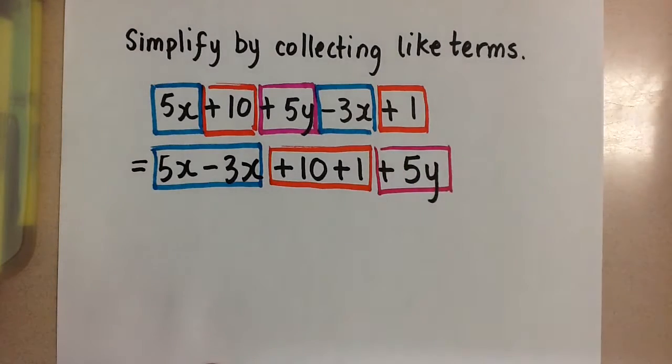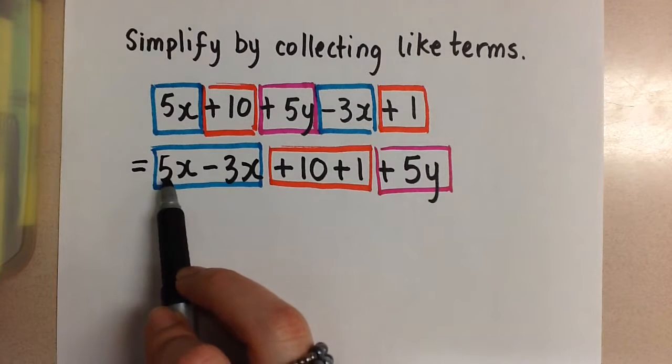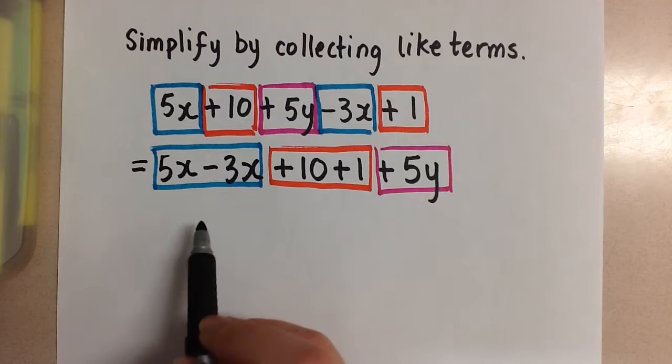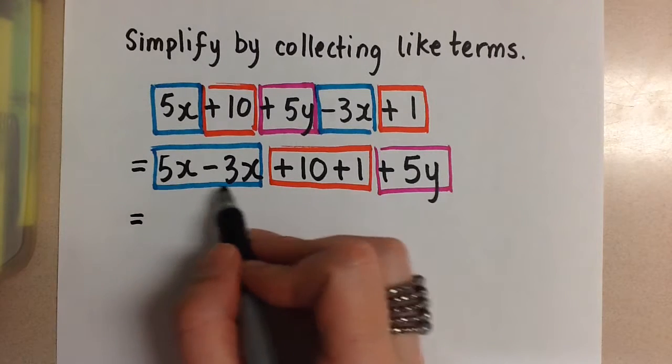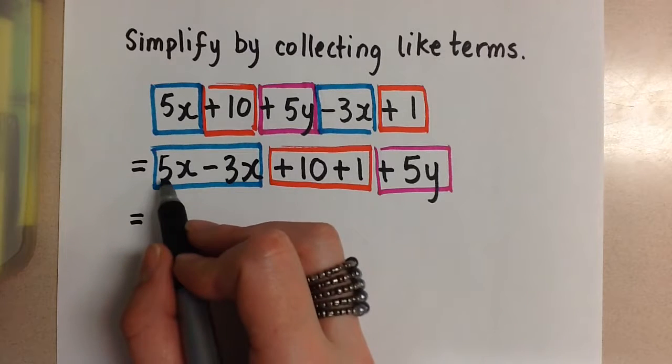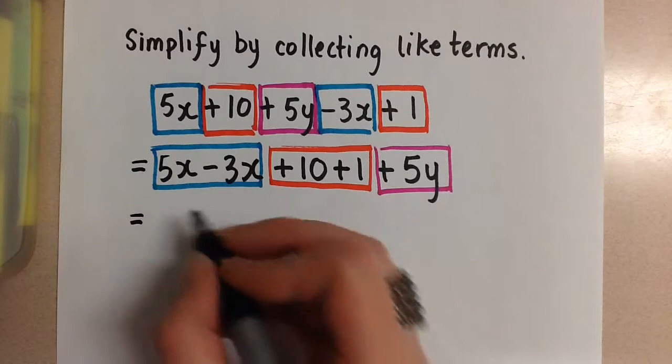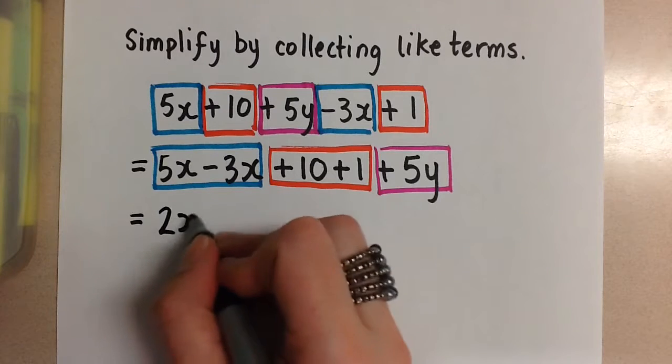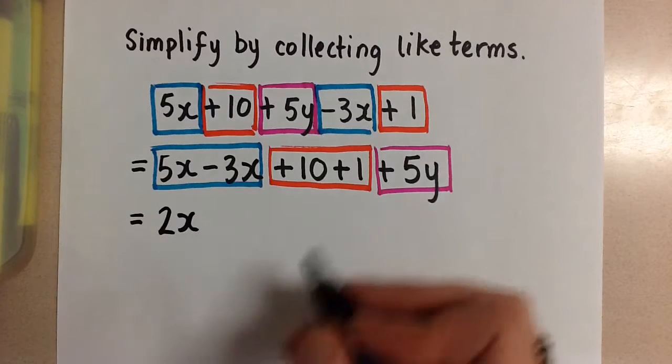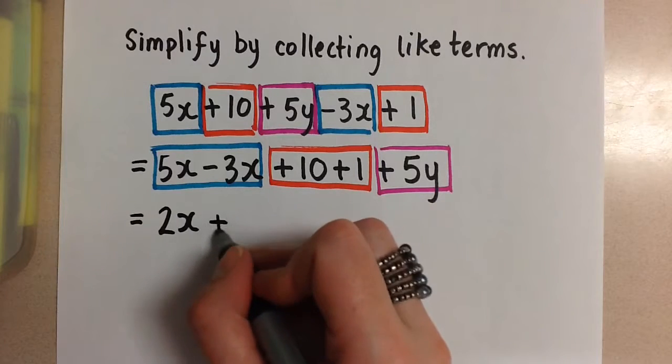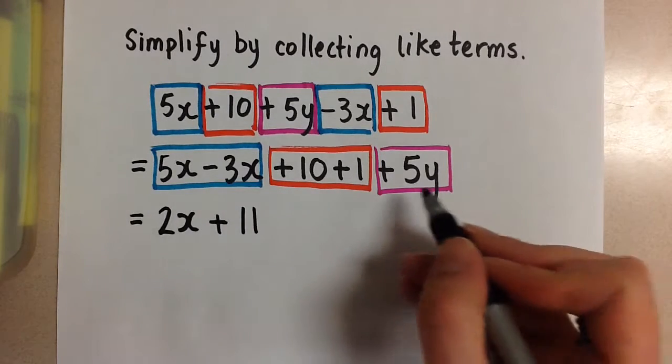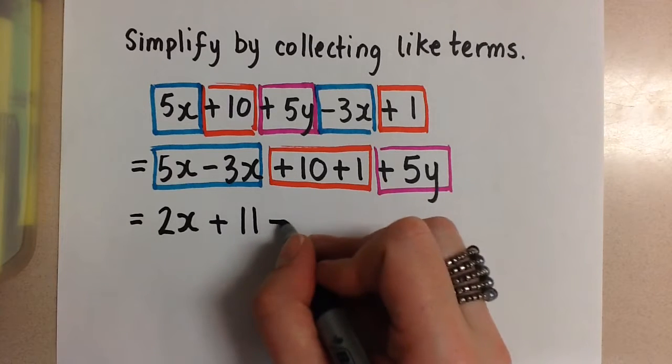So now I collect these by adding or subtracting the coefficients, that is the number that's attached to the variable and then I leave the variable the same. So when I combine 5x minus 3x I subtract 5 minus 3 and I get 2x. Then I add the constants 10 plus 1 is 11 and I have the plus 5y still.